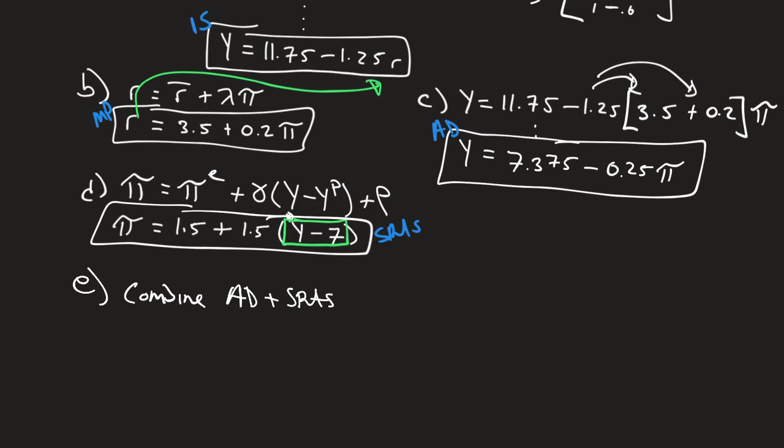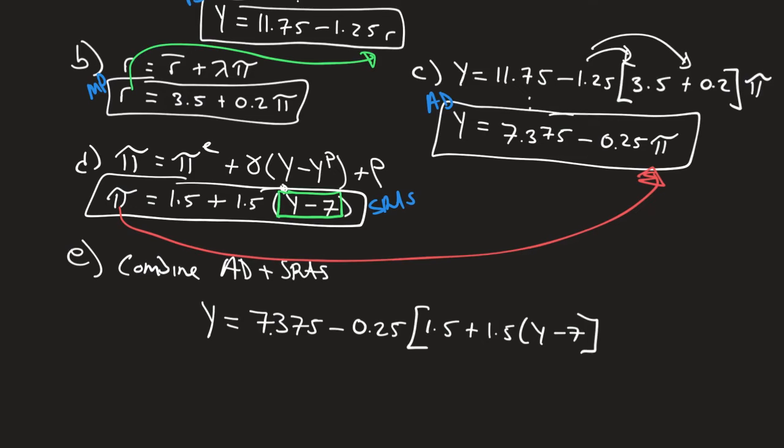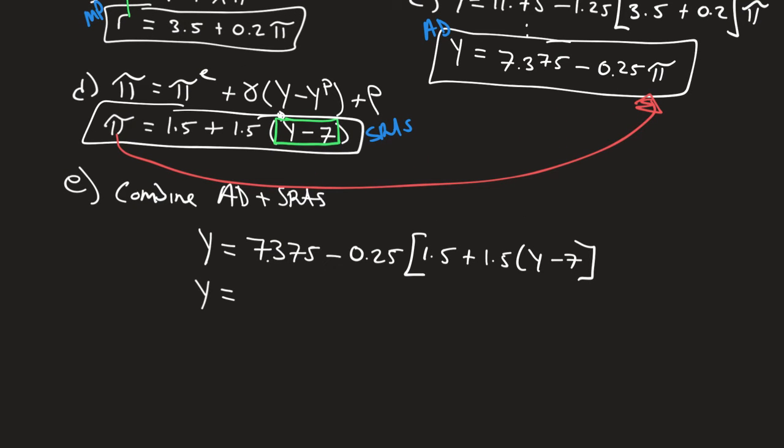I think the easiest way to do this is to take aggregate demand, which is Y equals 7.375 minus 0.25, and then just plug this in. We've done this before, plug this into here. And what do we get? We get 1.5 plus 1.5 times Y minus 7. And let's go ahead and actually do this math out this time, so we're comfortable with everything. Y equals 7.375 minus 0.25 times 1.5 equals 0.375 minus 0.375 times Y minus 7.